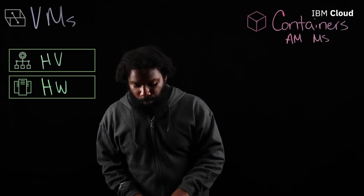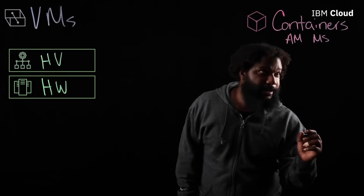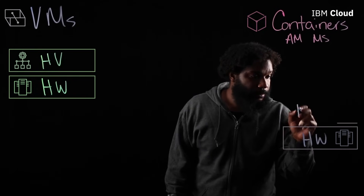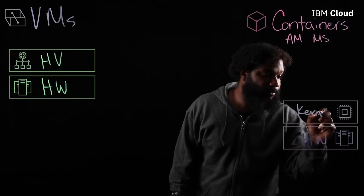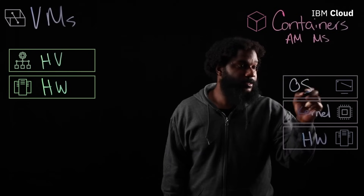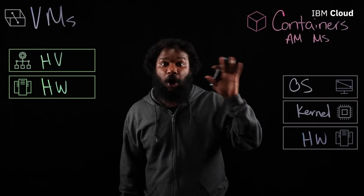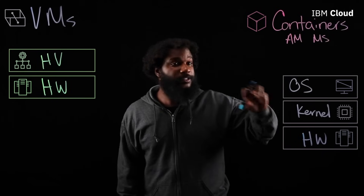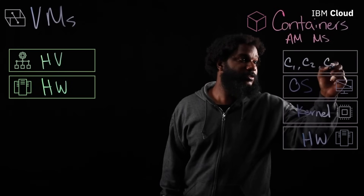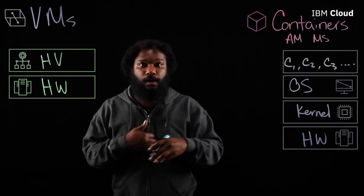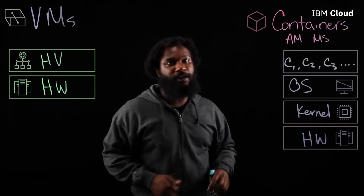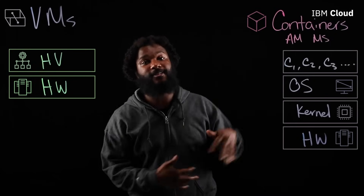Whereas with containers, we start again with the hardware down at the bottom, but we build them up a little bit differently. We have on top of our hardware our kernel, which is what helps our software and hardware talk to each other. And on top of our kernel, we have our operating system — we call it our host OS because it's going to be what's hosting all of our containers. And then on top of the operating system, we have each container that's running. C1, C2 — we can run many dozens of containers in one instance of an operating system. That's why this is called operating system level virtualization.